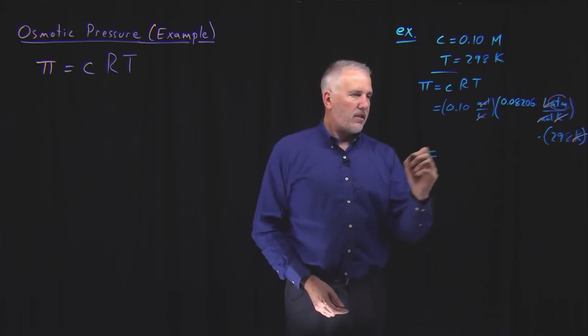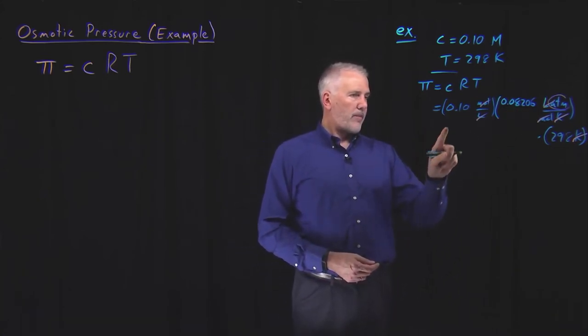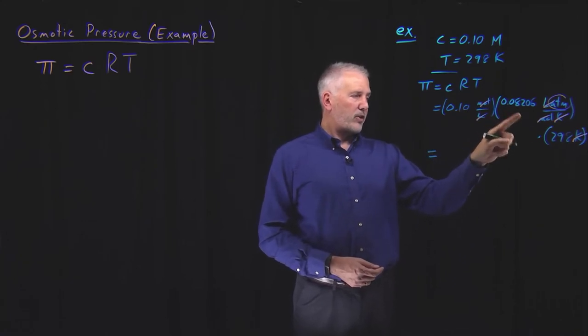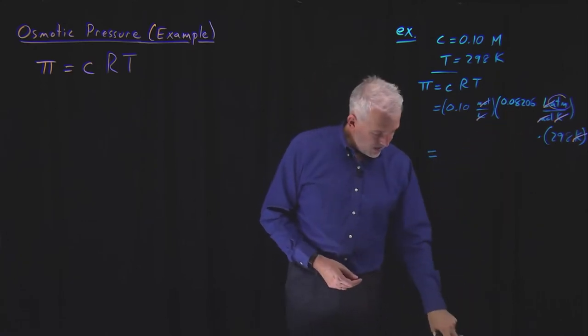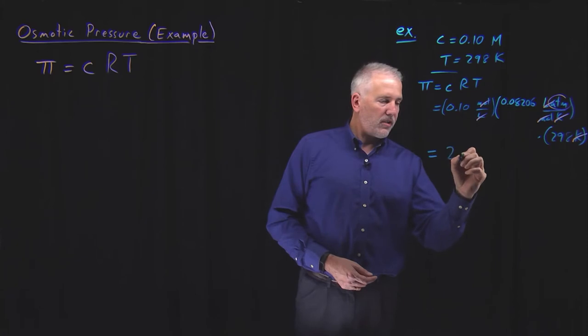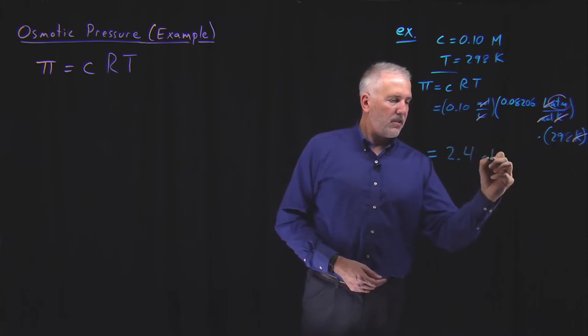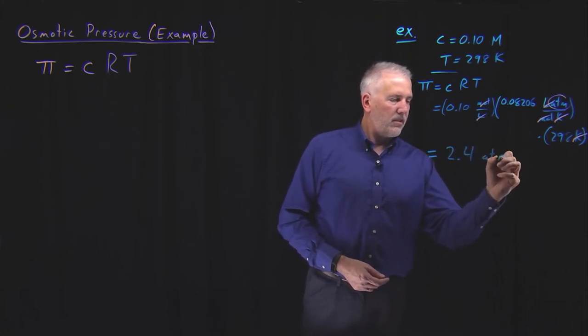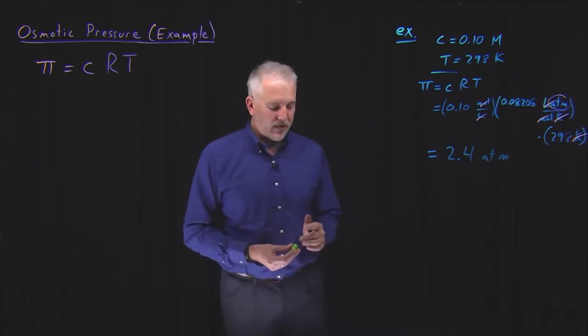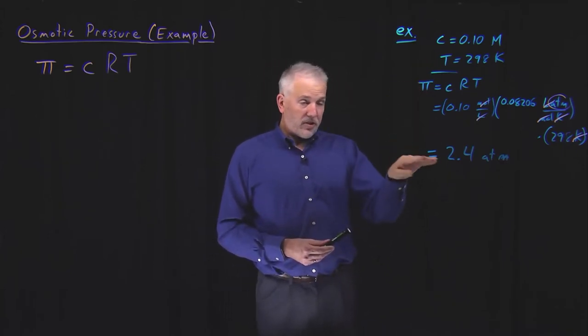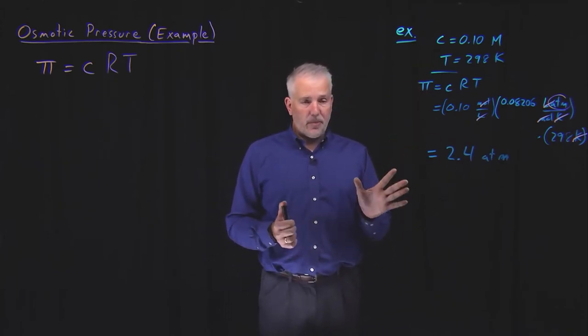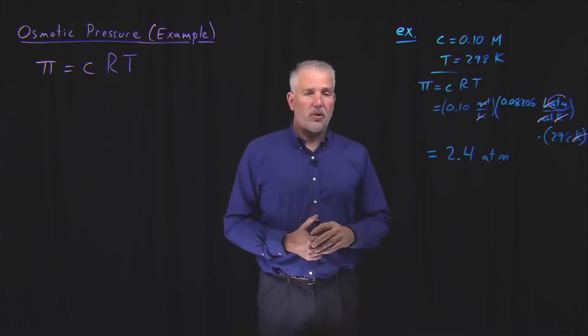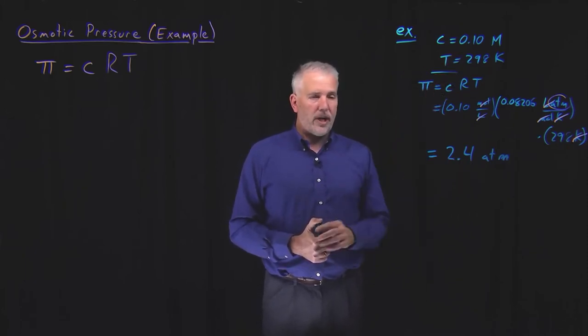And if I work that math out, 0.1 times this value of the gas constant times 298, that works out to a pressure of 2.4 atmospheres. So as a numerical calculation, that's not a difficult calculation. The osmotic pressure for a 0.1 molar sucrose solution is 2.4 atmospheres.